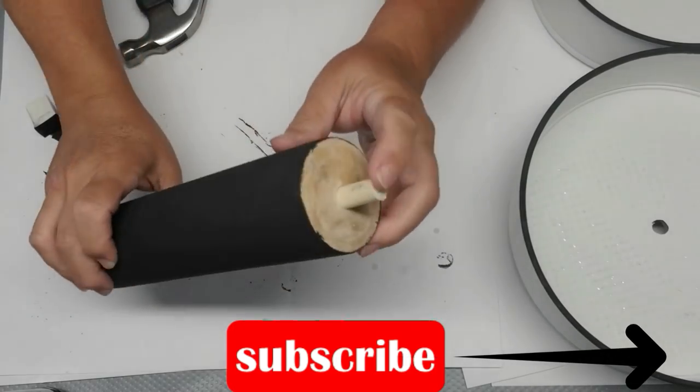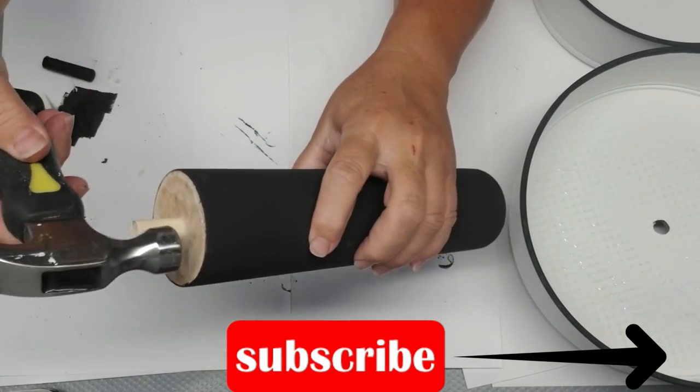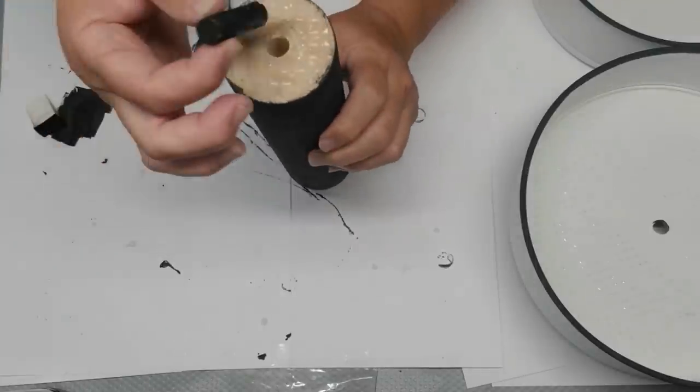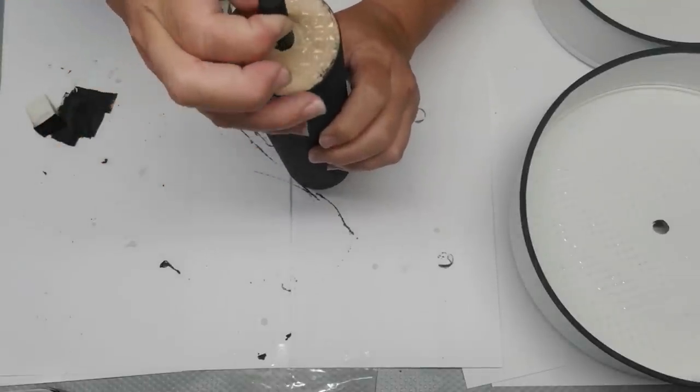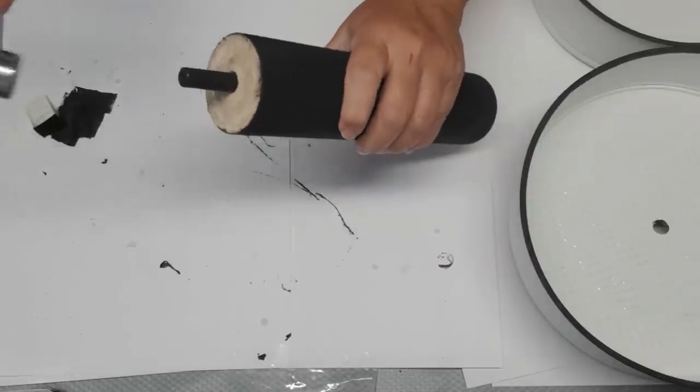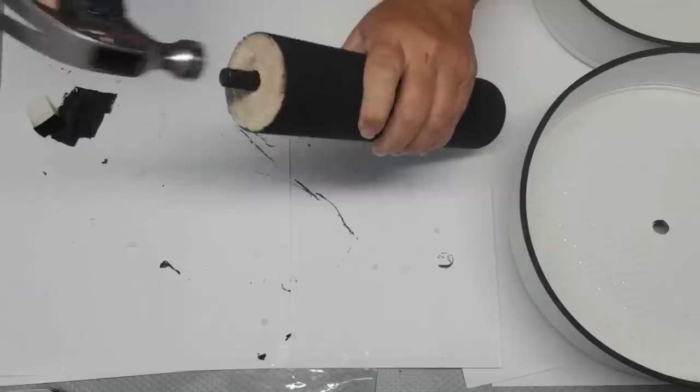Now comes the fun part. I'm going to assemble this and cross my fingers that it turns out the way I have it pictured in my head. I think it will. I'm tapping these dowels into the ends of the rolling pin and that's going to give me the sturdiness that I need for the tray.